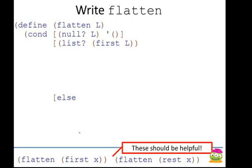I've written out the base case and the single test inside of flatten. If the list is null, then I can just return null, and I'm going to check, is the first thing a list?